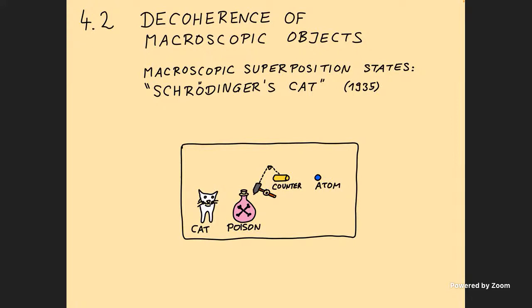First I'll describe Schrödinger's cat, and then I can tell you what it has to tell us about decoherence. Schrödinger invented this example actually not to say that this is possible, but rather to say in the early days of quantum mechanics that quantum mechanics gives rise to very weird predictions. And so what was then known in 1935 about quantum mechanics could not yet be the last word. That was the spirit of his Gedanken experiment.